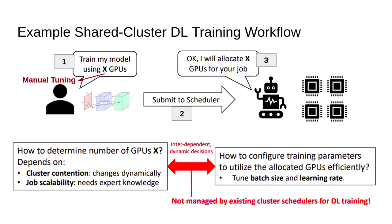The overview shows how people use a GPU cluster broadly. After setting training parameters and submitting the model to the scheduler, the scheduler considers cluster contention — how many jobs vs. GPUs — and job scalability, which means whether a job can successfully utilize more GPUs and run faster with more resources.